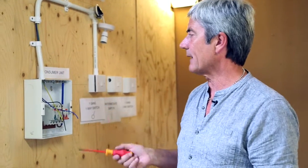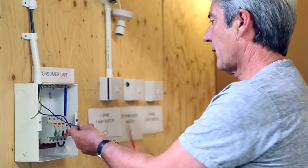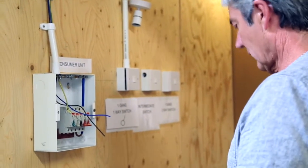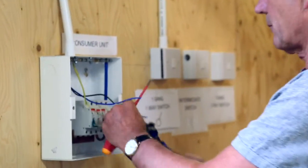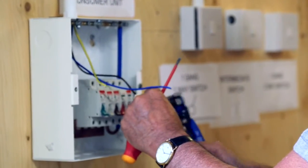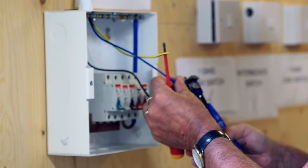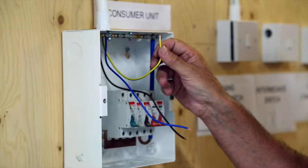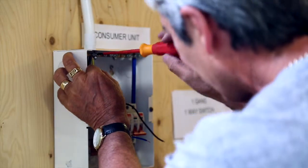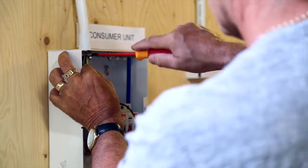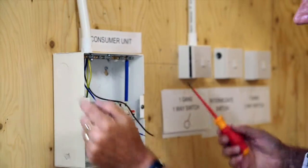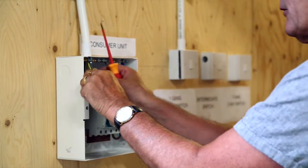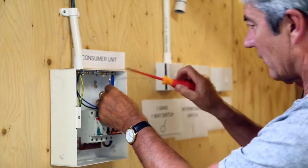Our final connections will now be at the consumer unit. So our first process is again stripping the cables. Again remembering not too much insulation. The first cable that we will insert is the CPC. This gives us protection via the earthing. Again no copper showing. Neutral into our neutral bar.